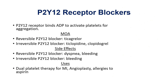Now let's get into the actual meat of this. You know I love mnemonics. The first drug class is P2Y12 receptor blockers. The general definition: a P2Y12 receptor binds ADP to activate platelets for aggregation. You know that ADP is needed in the platelet. Let me briefly walk you through what happens — there's platelet adhesion, which is the initial response to blood vessel injury.